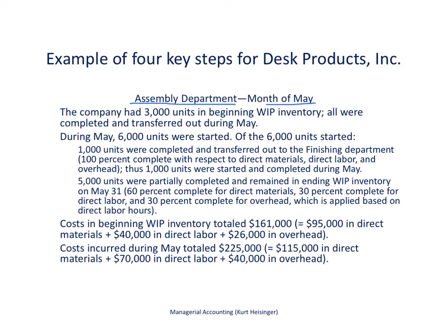Remember, each department has its own work in process inventory account. So here we're looking at the assembly department work in process inventory. The company had 3,000 units in beginning work in process inventory — that is, at the end of last month, we had 3,000 units in work in process inventory that carried over into May.